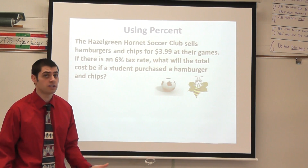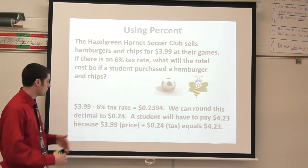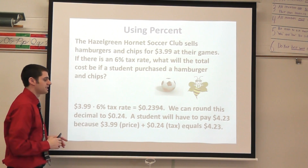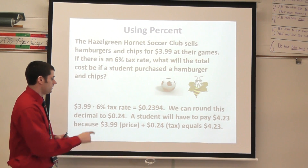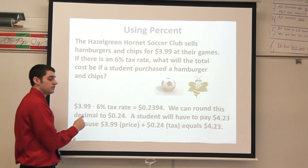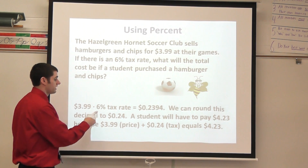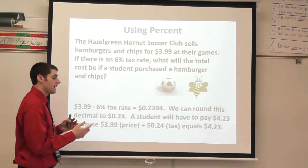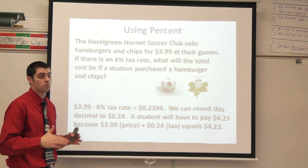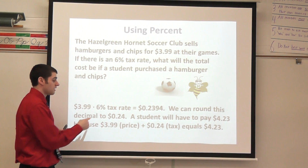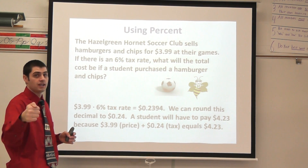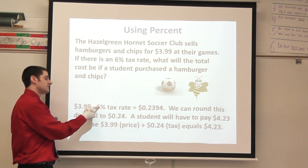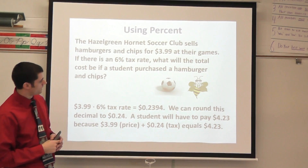I'm going to walk you through one way you could have possibly solved this problem. I would start with my original price, which is $3.99, and I'm going to multiply that times the tax rate. You can write this one in two ways: I can write it as either 0.06, or I can write it as 6%. When actually typing this into my calculator or my phone, I can do it one or the other — either 0.06, or if I'm going to type it in with percent, I would put 6 and then make sure you actually hit the percent button. So 3.99 times 6% is going to equal 0.2394.